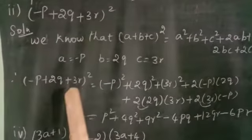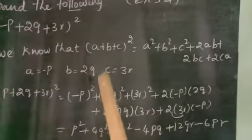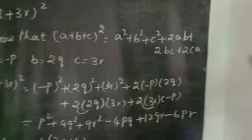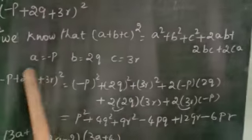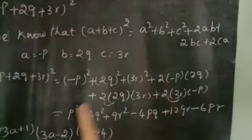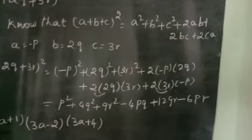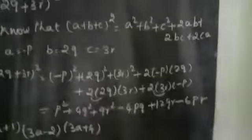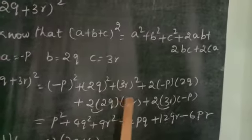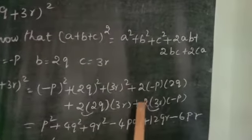Therefore, minus p plus 2q plus 3r, the whole square, using the identity a plus b plus c whole square equals a square plus b square plus c square plus 2ab plus 2bc plus 2ca. Now we substitute the values of a, b, and c. So a square is minus p the whole square, b square is 2q the whole square, c square is 3r the whole square, plus 2ab.